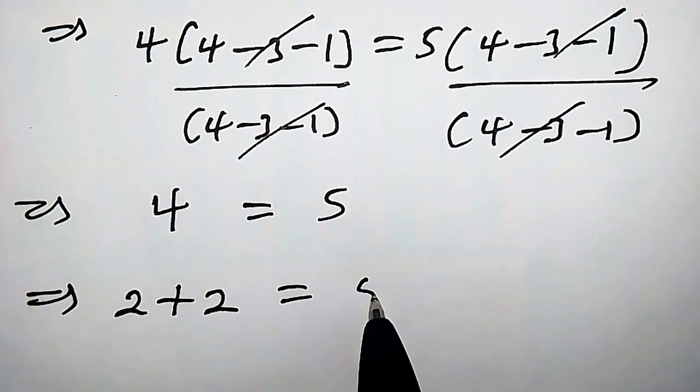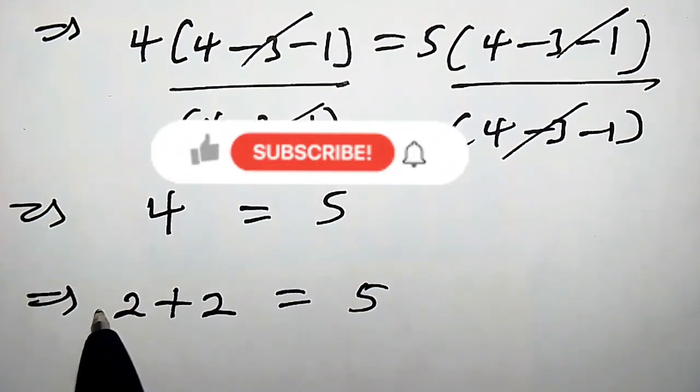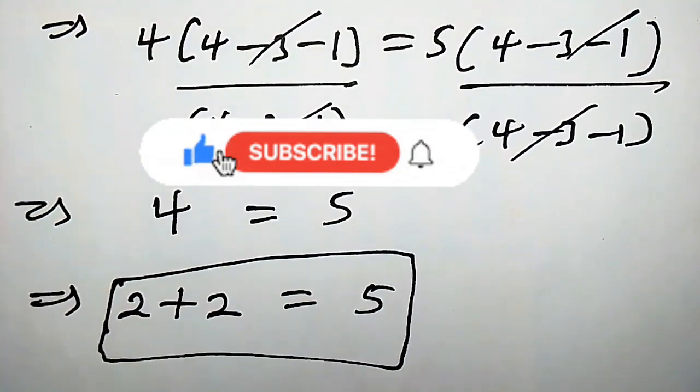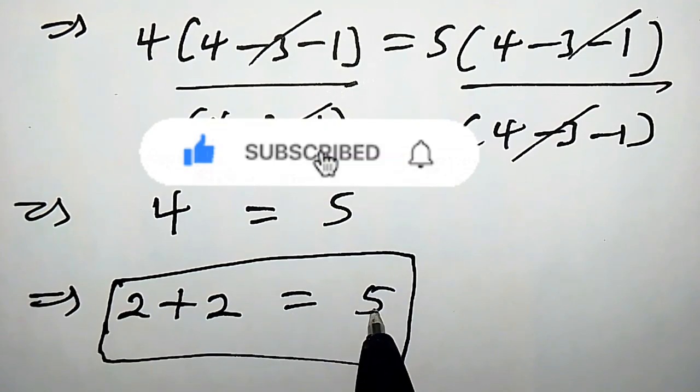This implies that 4 could be written as 2 plus 2, which is 2 plus 2, which is equals to 5. Wow, so we just broke one of the rules of mathematics, that is 2 plus 2 equals to 5.